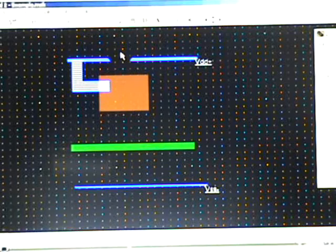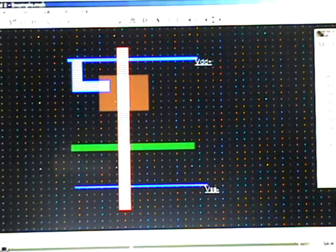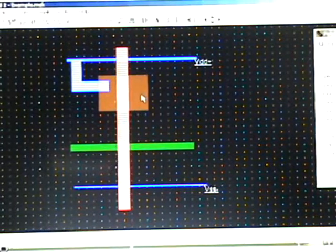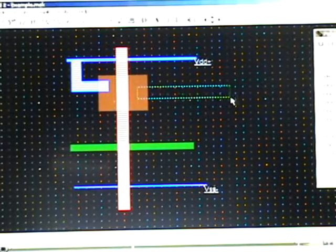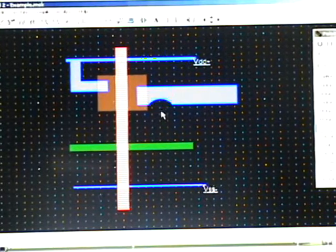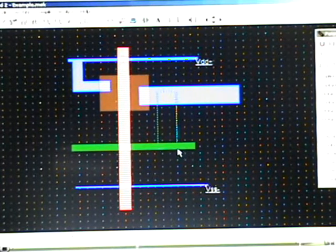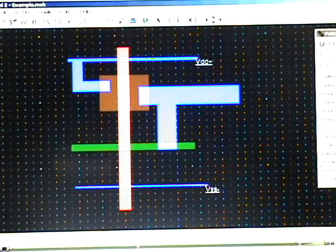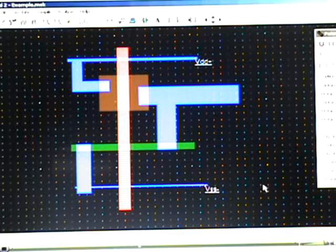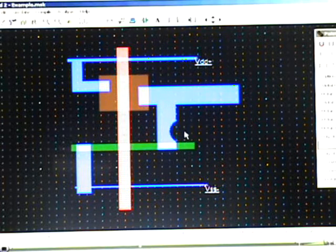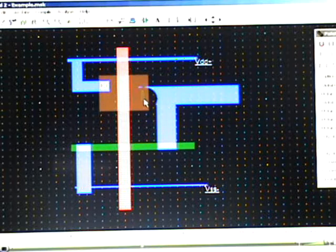Let us drop down a polysilicon and make a connection. From here, that will serve as the output. Let us make it heavier, and that also goes to the N-plus. The other side is connected to the VSS. So, let us provide contact.